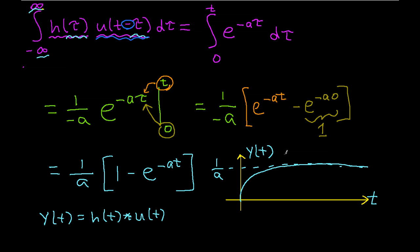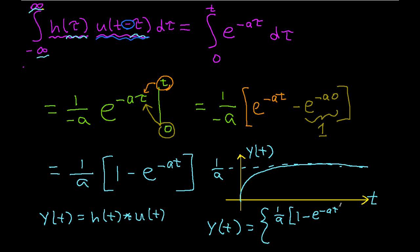So the complete expression for y of t — the convolution — is: 1 over a times the quantity 1 minus e to the minus a t, when t is greater than 0, and 0 when t is less than 0. So we've computed the convolution of h of t with u of t.